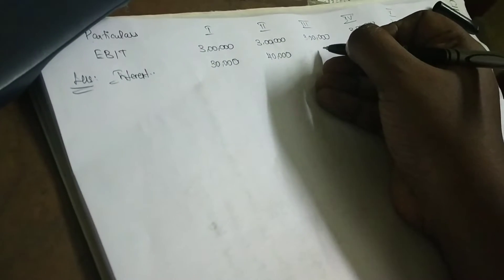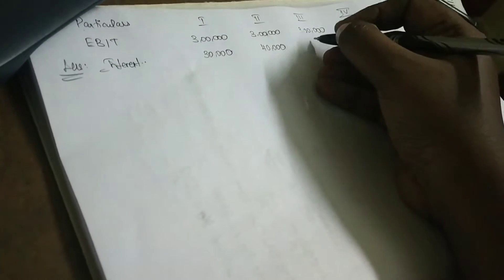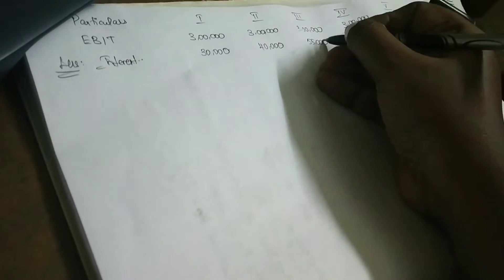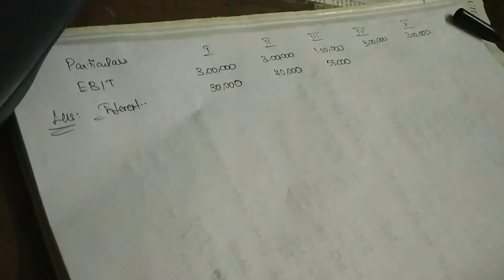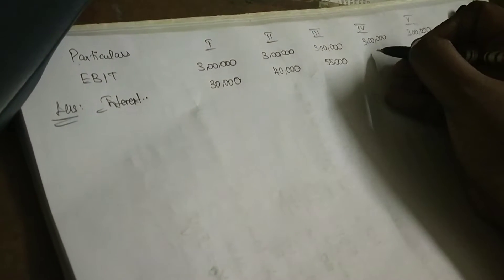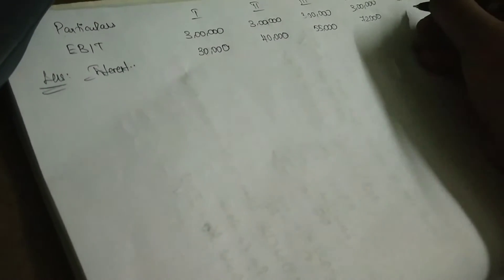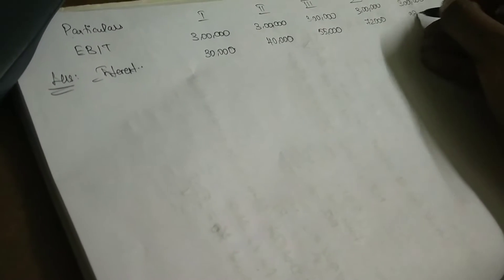For the third capital structure, the cost of debt is 11%, so 5 lakh × 11% = Rs. 55,000. For the fourth, it is 12%, so 6 lakh × 12% = Rs. 72,000. For the fifth, it is 14%, so 7 lakh × 14% = Rs. 98,000.